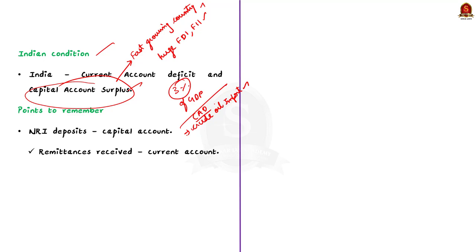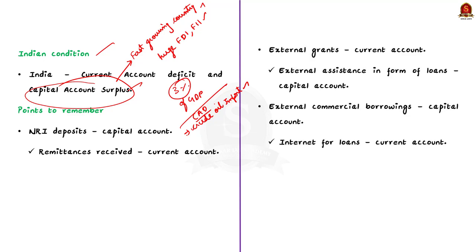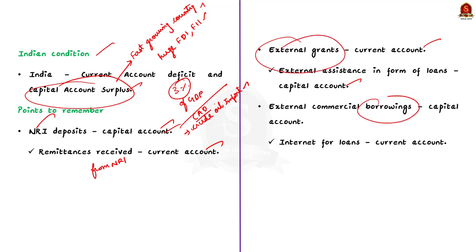Here are three important points distinguishing current account and capital account. First, regarding NRI: while NRI deposits are included in the capital account, remittances received are included in the current account. Second, regarding grants: while external grants are included in the current account, external assistance in the form of loans is included in the capital account. Third, regarding borrowings: while external commercial borrowings are included in the capital account, the interest for those loans is included in the current account.